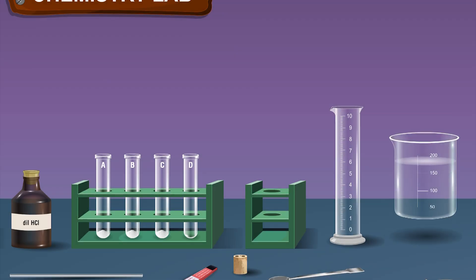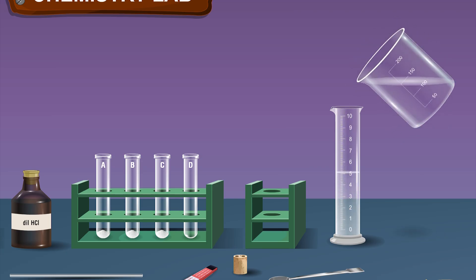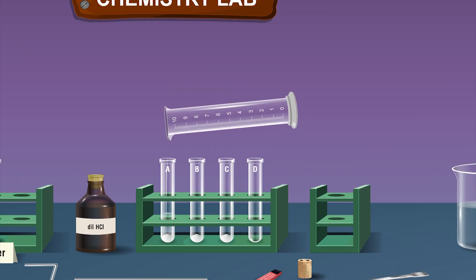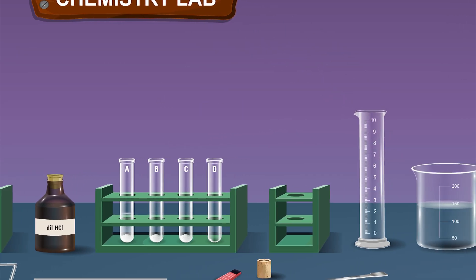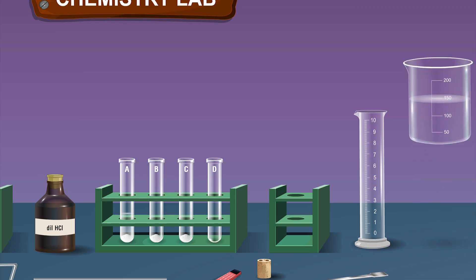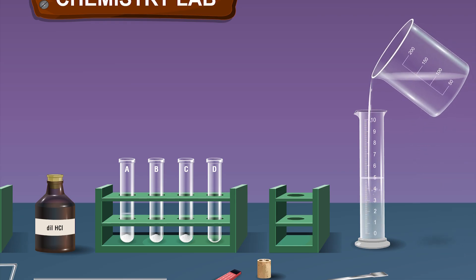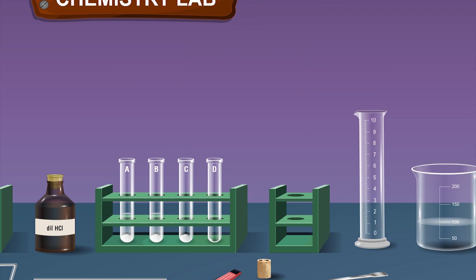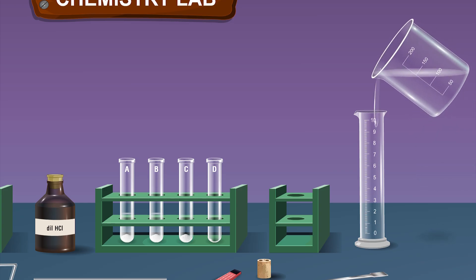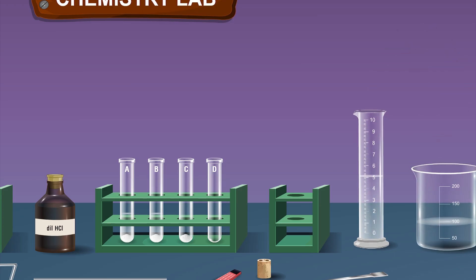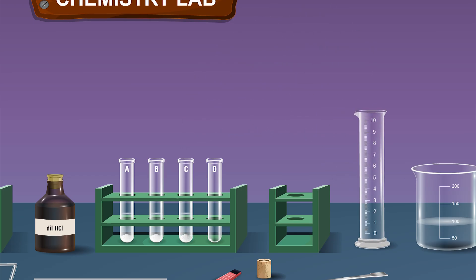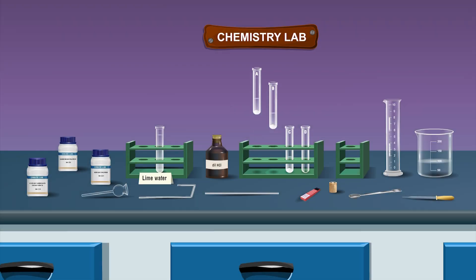Add 5 milliliters of distilled water to each test tube containing sodium carbonate decahydrate, ammonium chloride, and sodium chloride, and gently shake the test tubes.